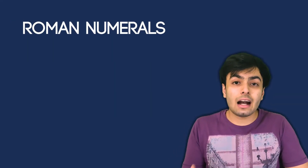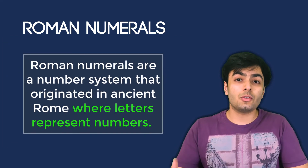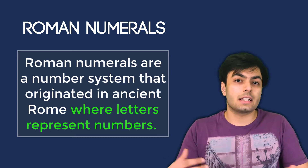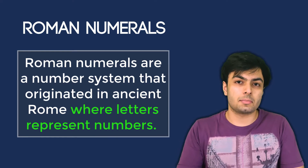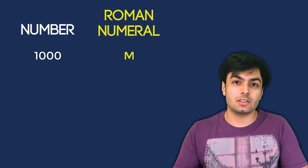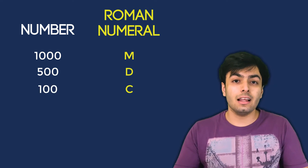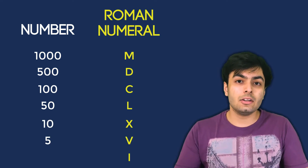Before we start coding, let's have a look at what Roman numerals are and how a number can be converted to its equivalent Roman numeral. Roman numerals are a number system that originated in ancient Rome, where letters represent numbers. In order to solve our problem, we need to know what certain Roman numerals mean. M represents 1000, D represents 500, C represents 100, L represents 50, X represents 10, V represents 5, and I represents 1.